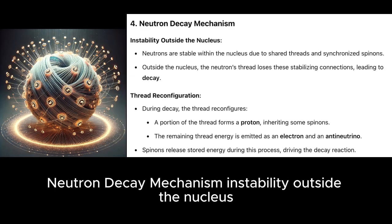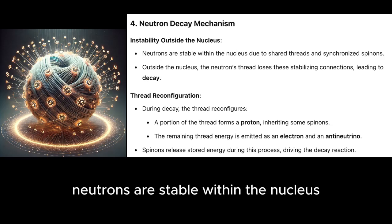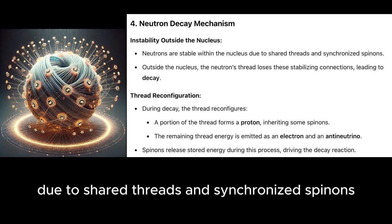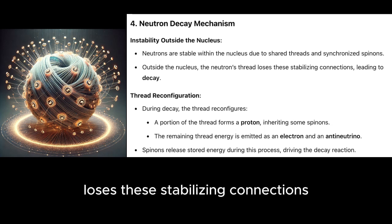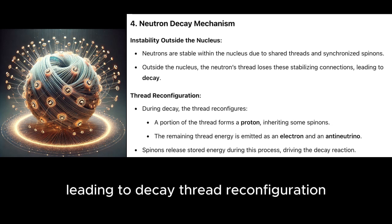Neutron decay mechanism instability. Outside the nucleus, neutrons are stable within the nucleus due to shared threads and synchronized spinons. Outside the nucleus, the neutron's thread loses these stabilizing connections, leading to decay.